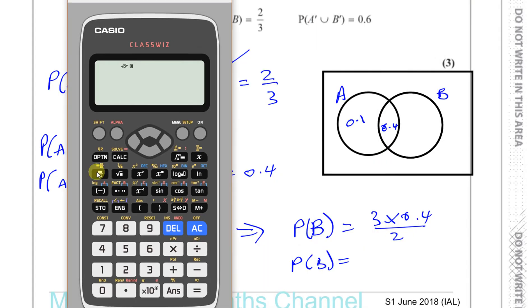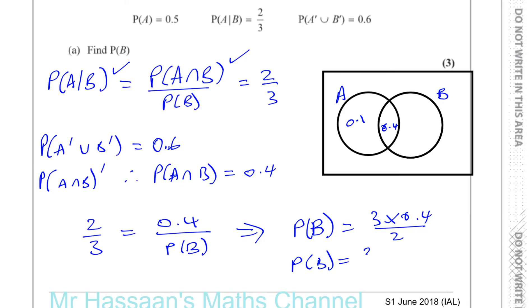So P(B) = 0.6 for the whole circle. That means the part of B only — outside of A — must be 0.2. And what's outside both A and B is 0.4 plus 0.2 equals 0.6... so outside the Venn diagram altogether is 0.3. I like to use the Venn diagram to complete the whole picture, as it helps with other parts of the question.